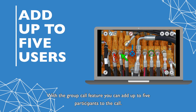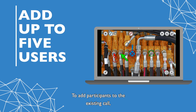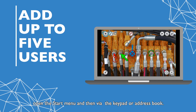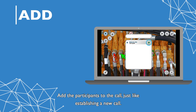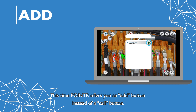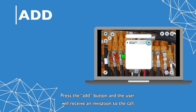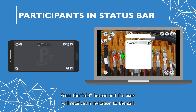With the group call feature, you can add up to five participants to the call. To add participants to an existing call, open the Start Menu and then, via the keypad or address book, add the participants to the call, just like establishing a new call. This time, Pointer offers you an Add button instead of a Call button. Press the Add button and the user will receive an invitation to the call.